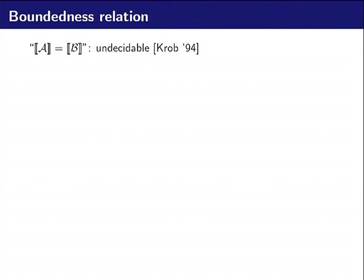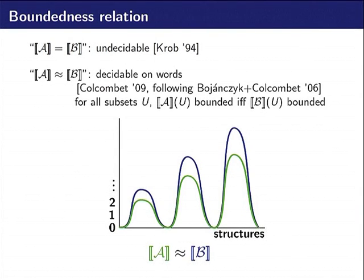Unfortunately, we know that it is undecidable whether two such automata compute the same function. That is why we relax what we want to decide and now we just want to look at if two functions are bounded on the same set. This is decidable, so what we will call a cost function will be an equivalence class for this relation.